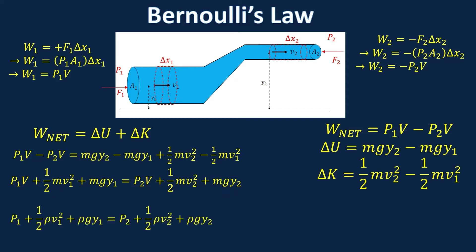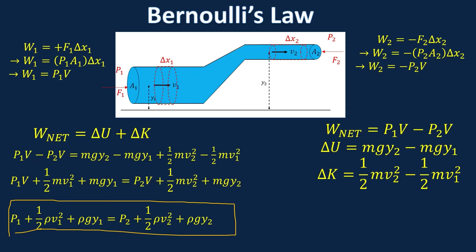That's the final expression for Bernoulli's law. This is used to compare things about any pipe or any flow where you have a fluid flowing — you have two points and compare the pressure, velocity, and height of those two points: P1 plus one half rho v1 squared plus rho g y1 equals P2 plus one half rho v2 squared plus rho g y2. You don't have to memorize that derivation for AP Physics, but you should be familiar with it and know all the steps conceptually.